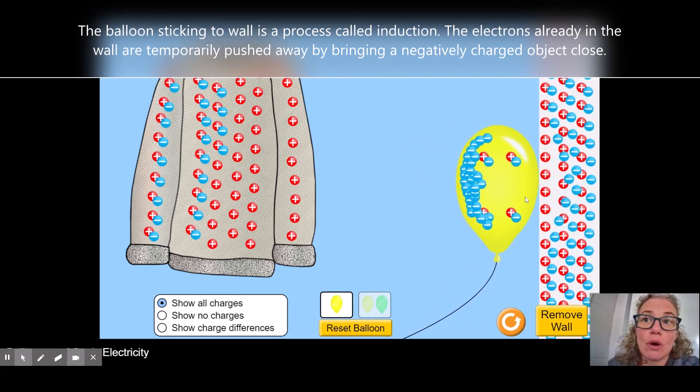So they're getting moved away from the balloon because like charges repel. And since the balloon is mostly negative, it's going to push the negative charges away that are in the wall.